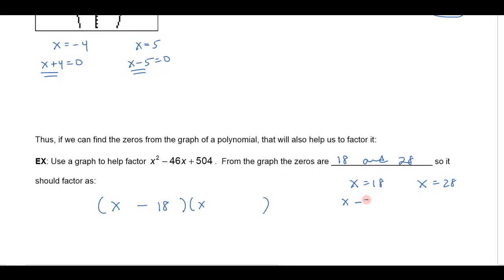I wrote 28, but it should be 18 here. And then likewise here, I'd bring the 28 over, x - 28 = 0, and so that's going to be another one of the factors. Now let's check and see if that really works.